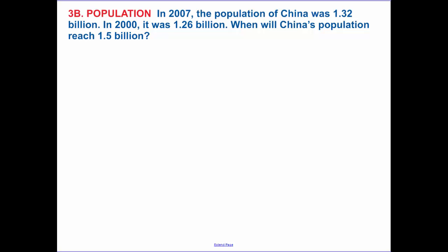So now this is building on what we had. In 2007, the population was 1.32. In 2000, it was 1.26, so it's starting with what we had. We're going to be utilizing this equation. Now we need to know when will China's population be 1.5 billion people. So I know my ending amount.